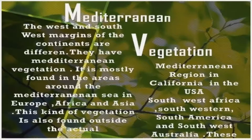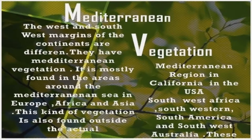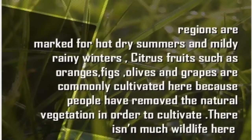Another type of forest is the Mediterranean forest. The west and southwest margins of the continents have Mediterranean vegetation. This forest is around the Mediterranean Sea in Europe, and in continents like Africa and Asia we also observe this Mediterranean vegetation. It is also found outside the actual Mediterranean region, especially in California in the USA, Southwest Africa, South America, and Southwest Australia. This region is marked for hot, dry summers, and citrus fruits like oranges, grapes, and oils are commonly cultivated here. Due to the extreme climatic conditions, there isn't much wildlife.